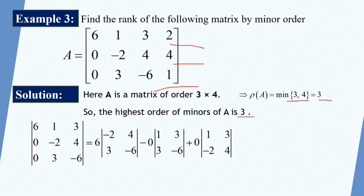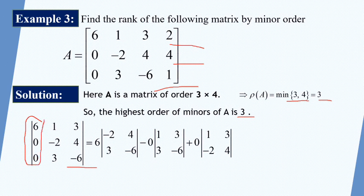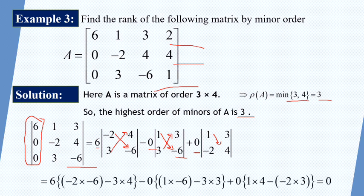The first 3x3 minor is [6, 1, 3; 0, −2, 4; 0, 3, −6]. We expand through the first column: 6·(−2·(−6) − 4·3) − 0 + 0. On solving the 2x2 determinants and multiplying by 6, 0, 0, we get this expression equal to 0. So this 3 by 3 determinant equals zero, meaning this minor is singular. Since this is only one minor checked so far and it is zero, the rank may still be less than 3 and we must check another minor.